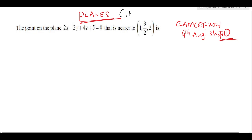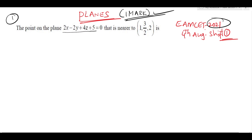Planes: this is one mark weightage in M-set, an important and easy chapter. The first question is from M-set 2021, 4th August, shift 2. The point on the plane 2x minus 2y plus 4z plus 5 equals 0 that is nearer to the point (1, 3/2, 2). The equation of the plane passes through (1, 3/2, 2) and has direction ratios 2, minus 2, 4.